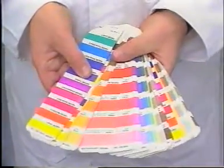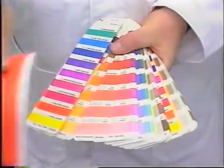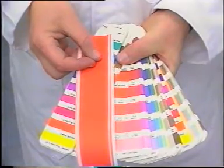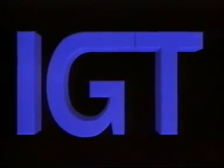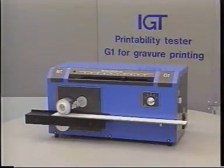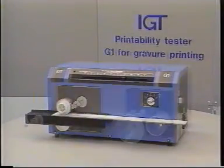The print made can be used for visual, spectrophotometric or other kinds of appraisal. In addition to the F1, IGT can also provide the G1 and C1.